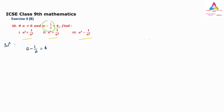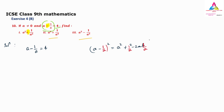We need the first result, a squared plus 1 by a squared. In the question we have a minus 1 by a. Using the identity (a minus b) whole squared equals a squared plus b squared minus 2ab, here b is 1 by a. So substituting, (a minus 1 by a) whole squared equals a squared plus 1 by a squared minus 2.